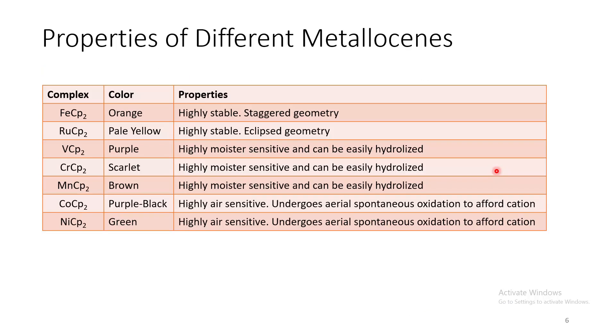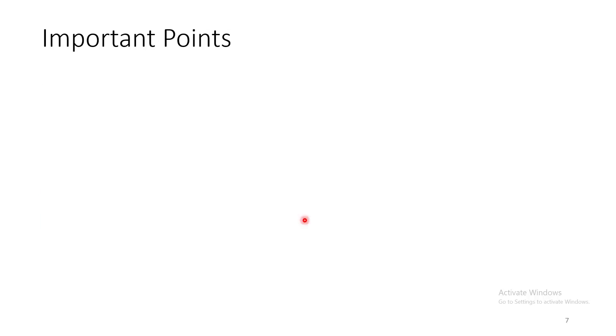Let us see the properties of different metallocenes. Among all these complexes, ferrocene and ruthenocene, they are highly stable. Whereas these vanadium, chromium, manganese, cobalt, nickel complexes are very unstable. They are highly moisture sensitive or air sensitive. Now, why is it so?